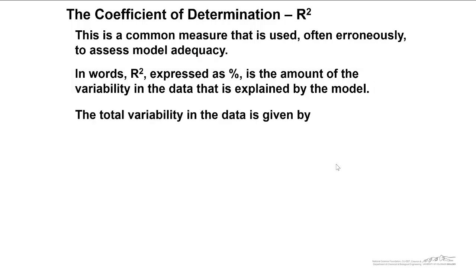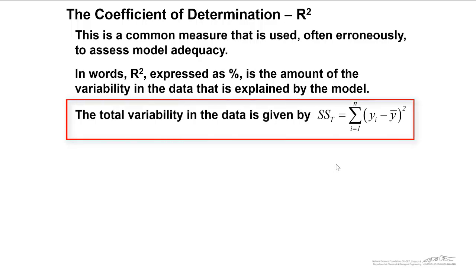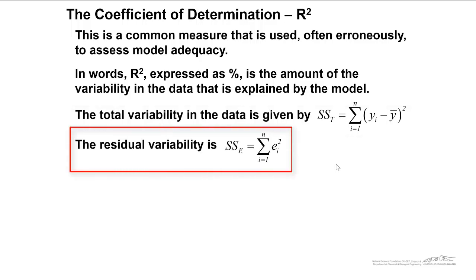The total variability in the data is given by the following SST. It's just the sum of Yi minus Y bar, and squaring all those. We've already seen that the residual variability, SSE, is given by the sum squared of the residuals.